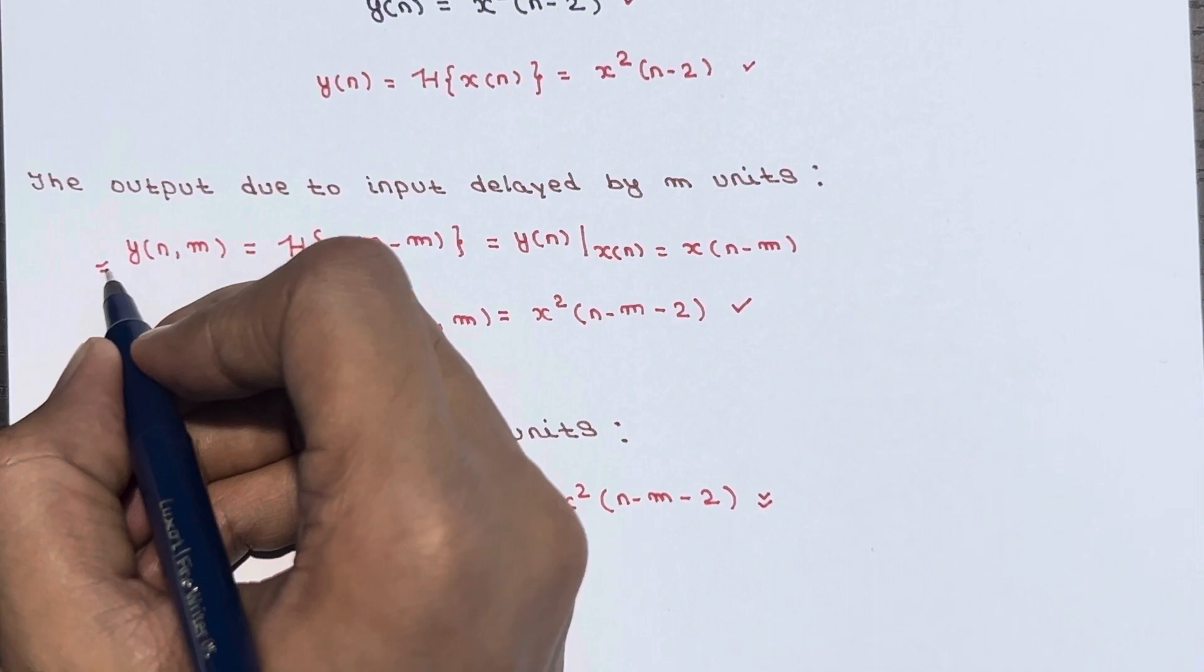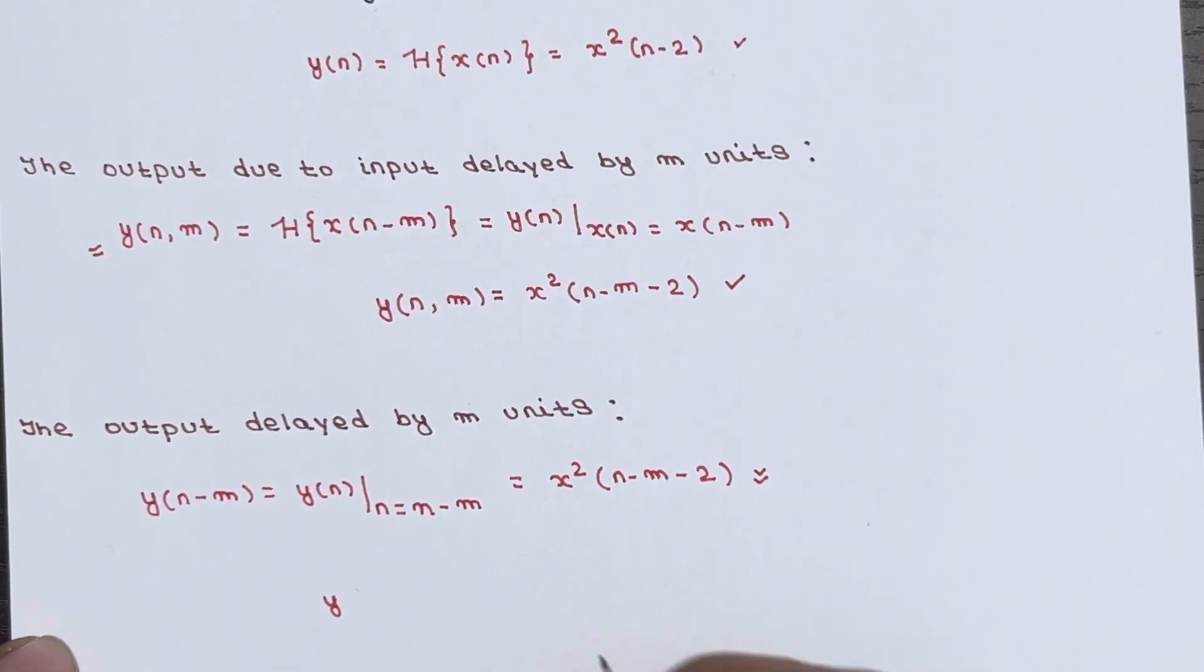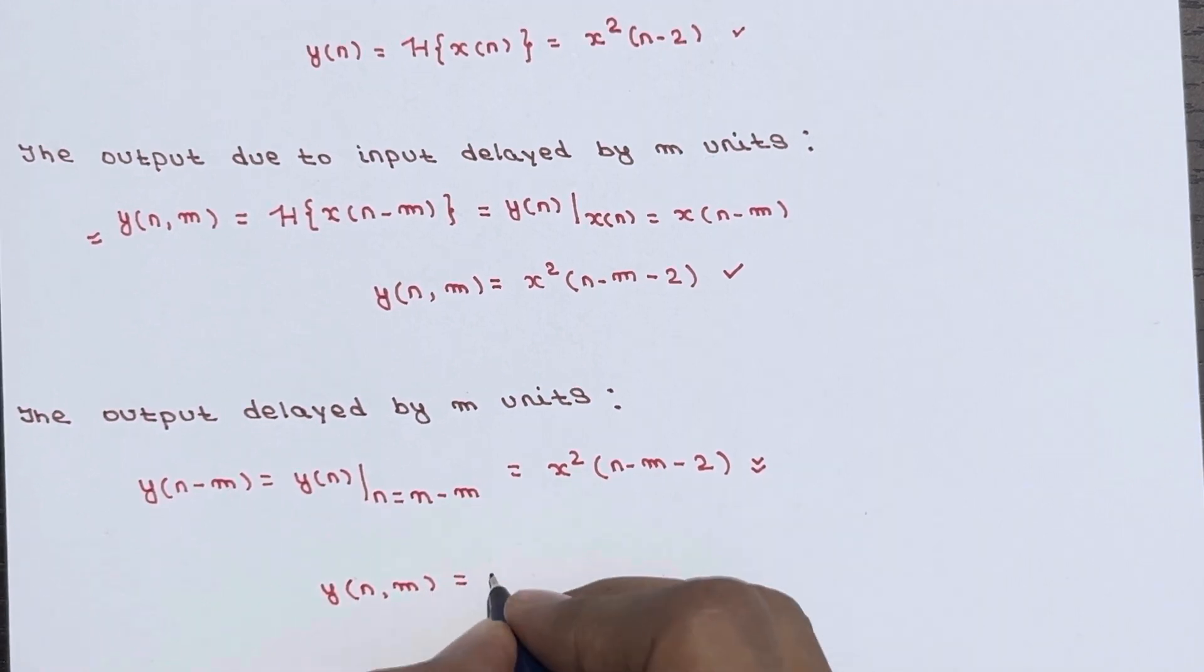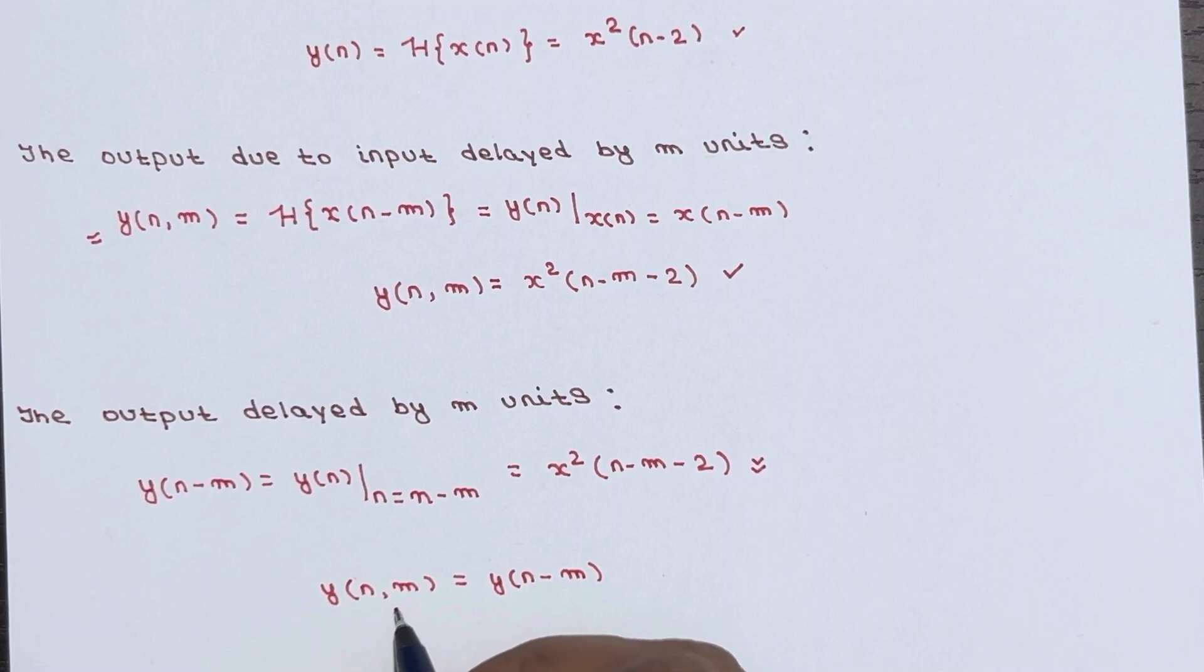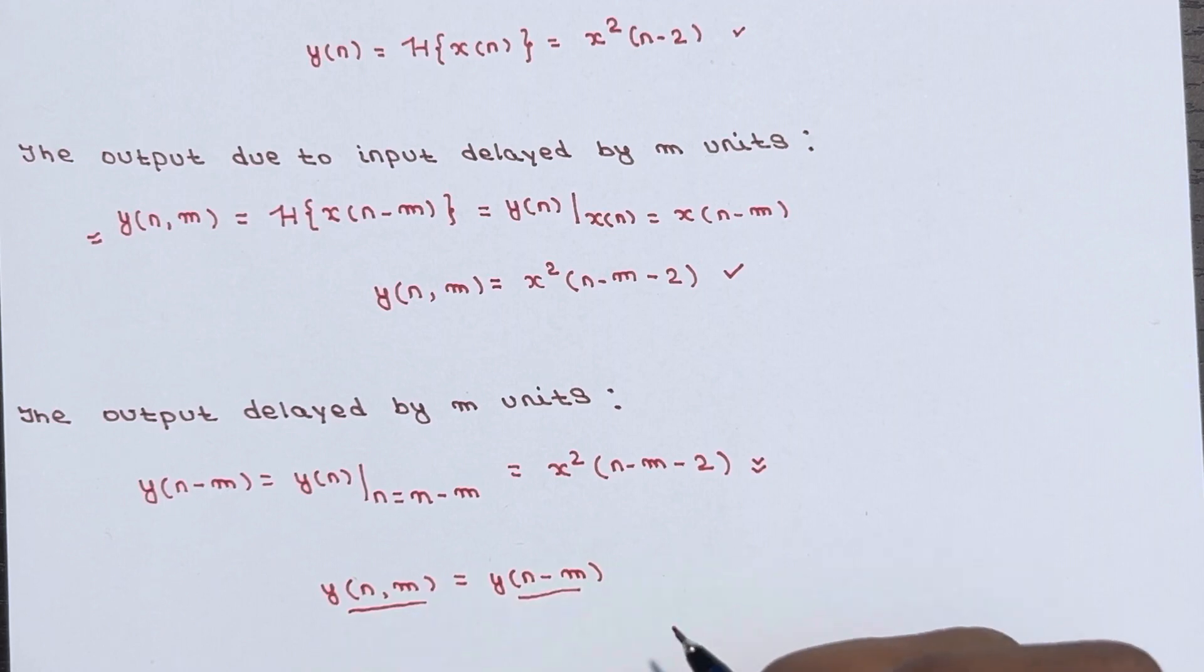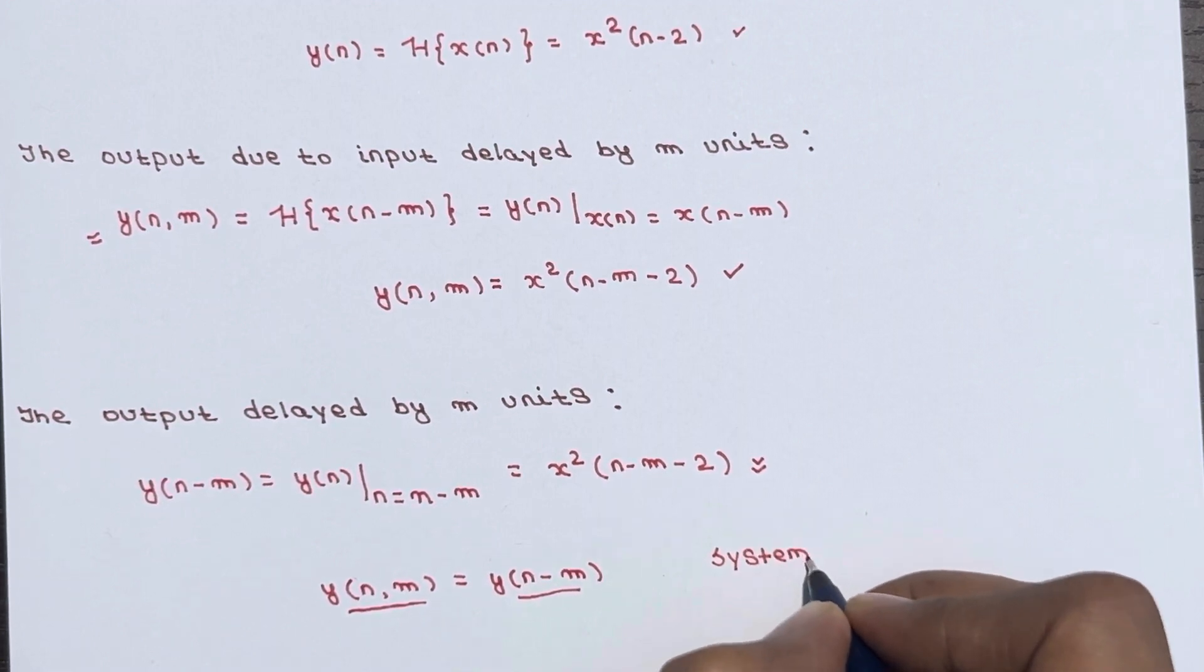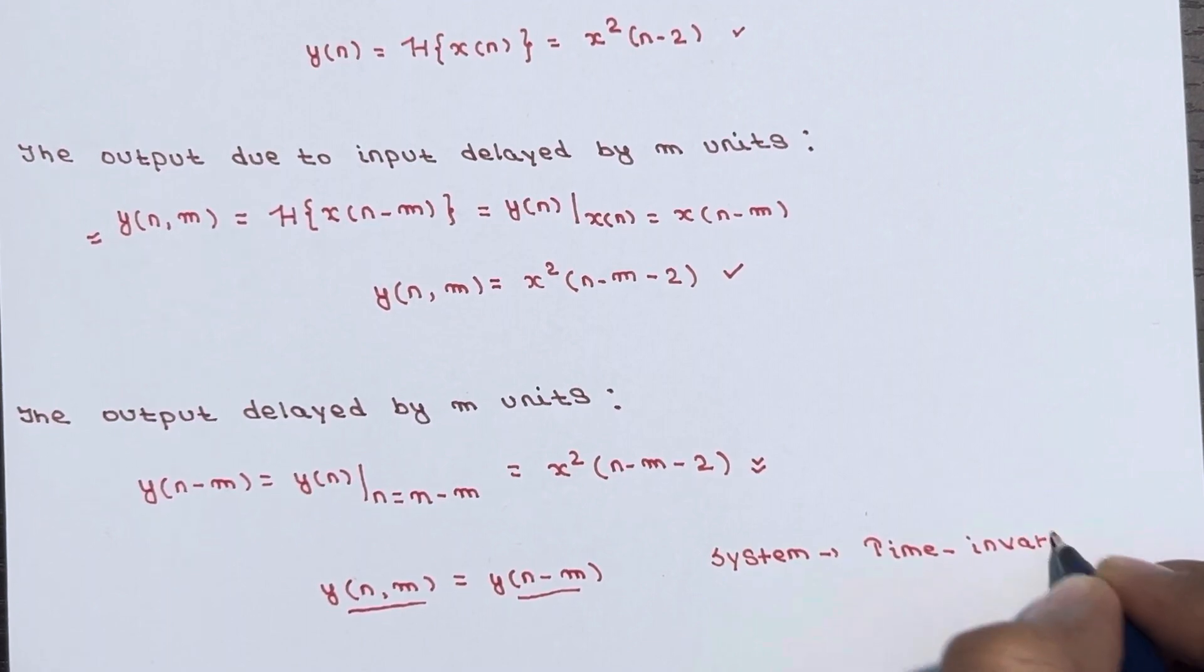So we got to know that these two are equal. We got to know that y(n,m) is equal to y(n-m). It means the output due to input delayed by m units is equal to the output delayed by m units. So we can say the system is a time invariant system.